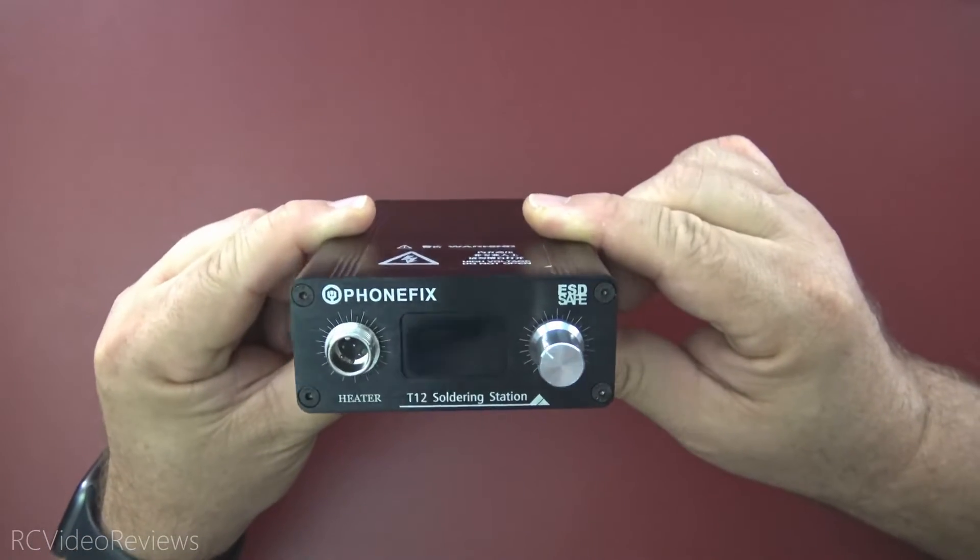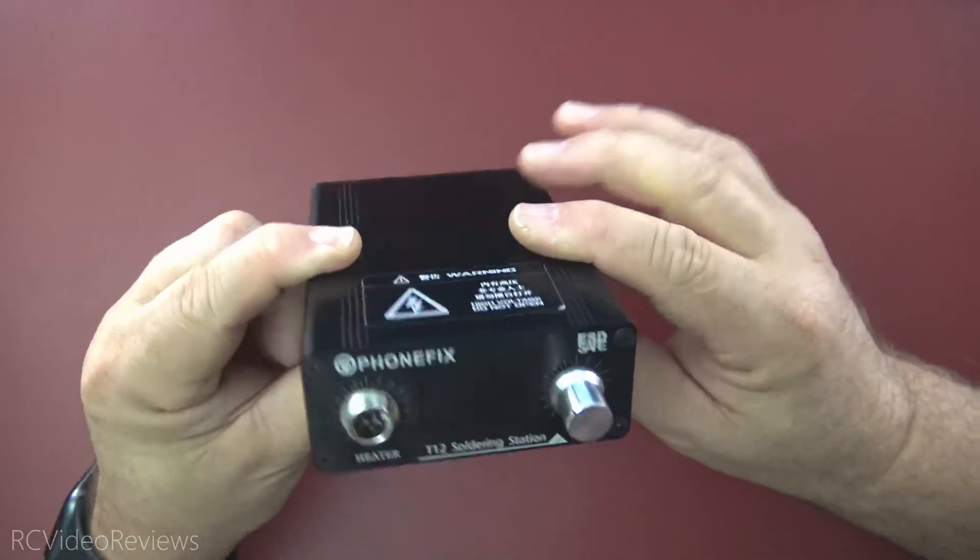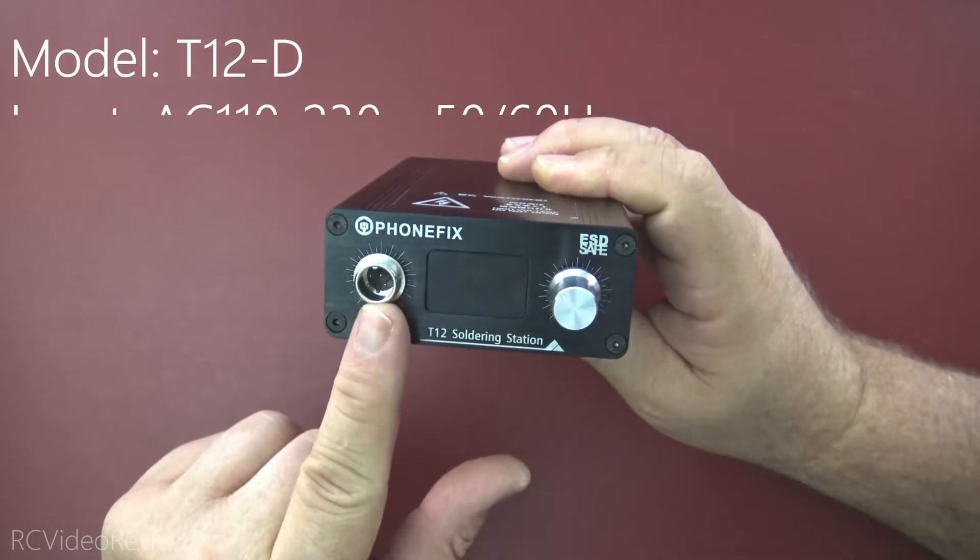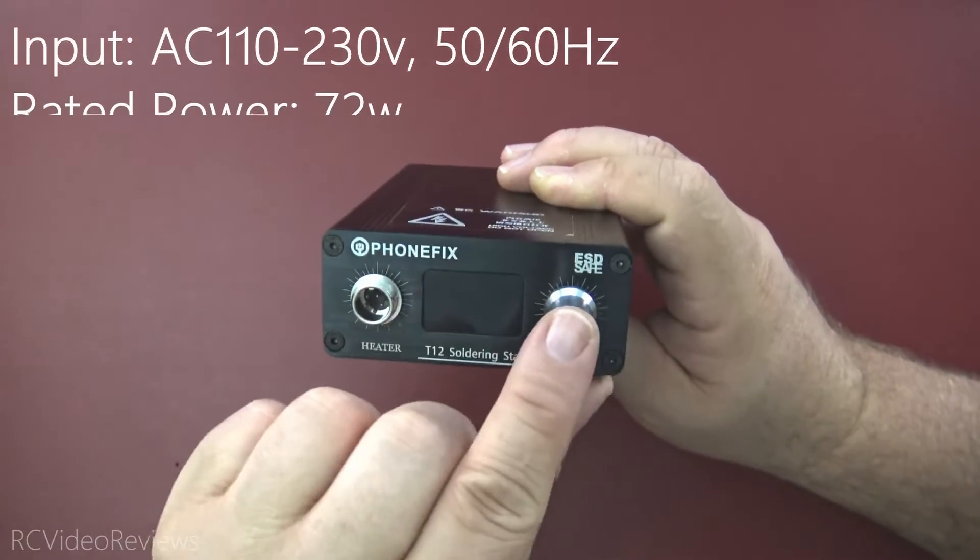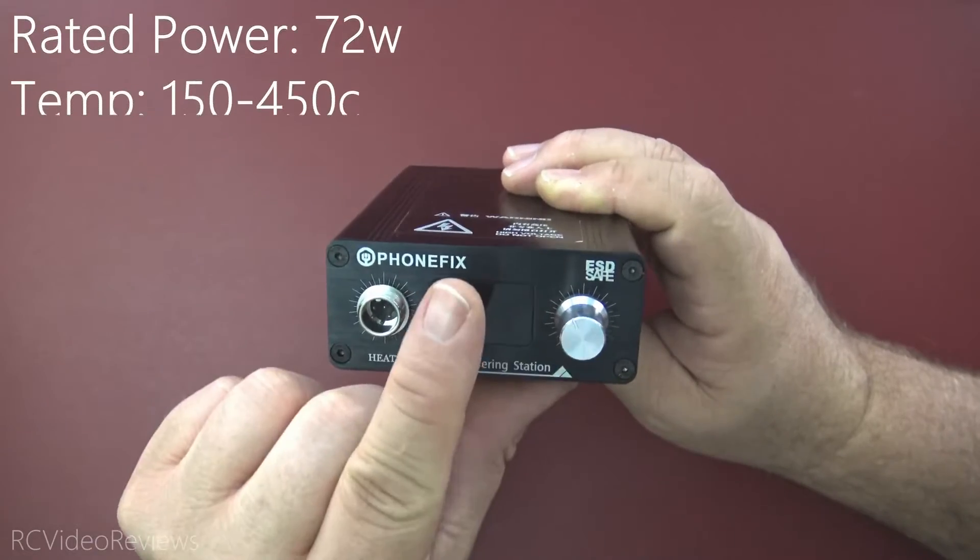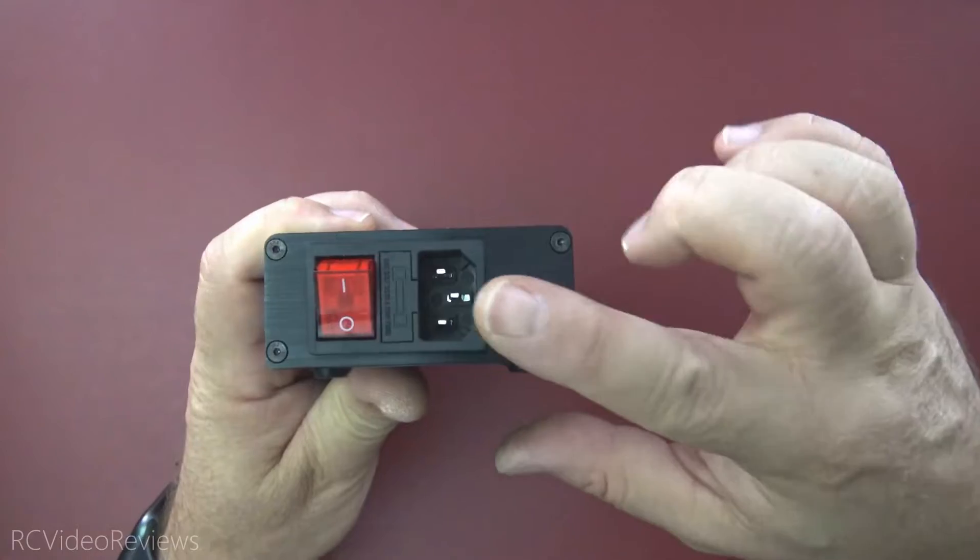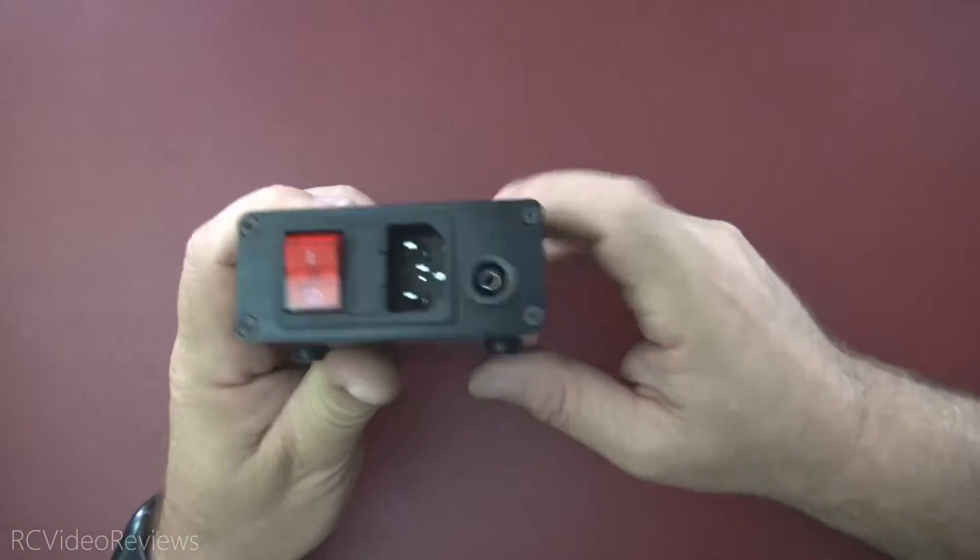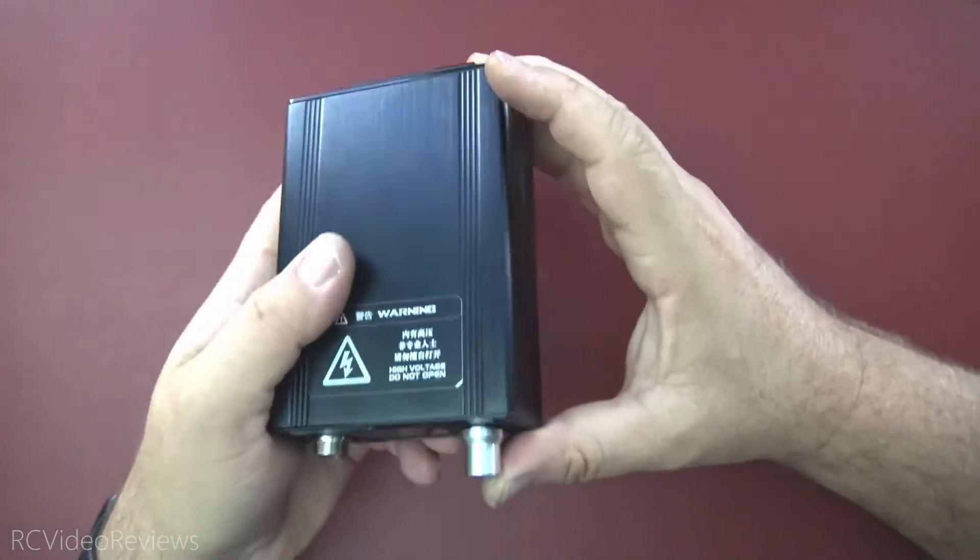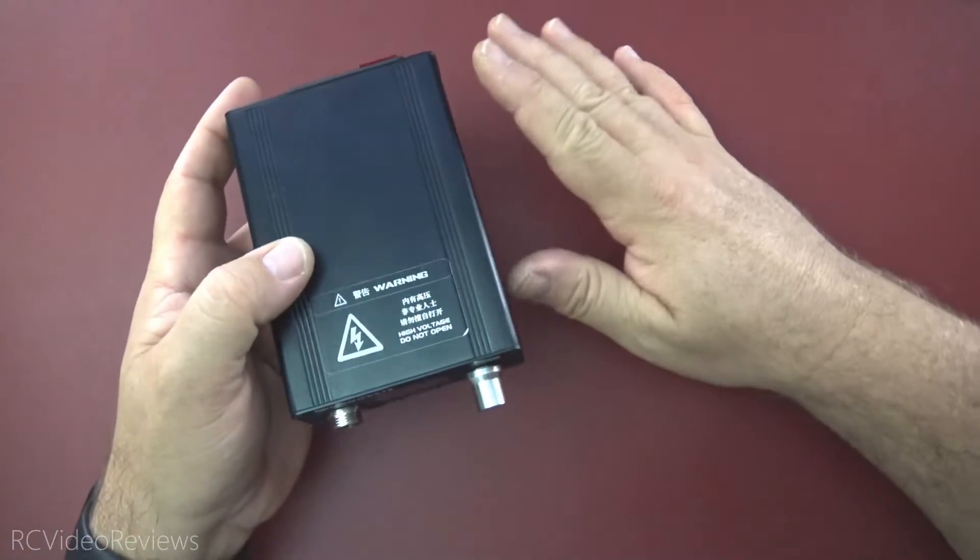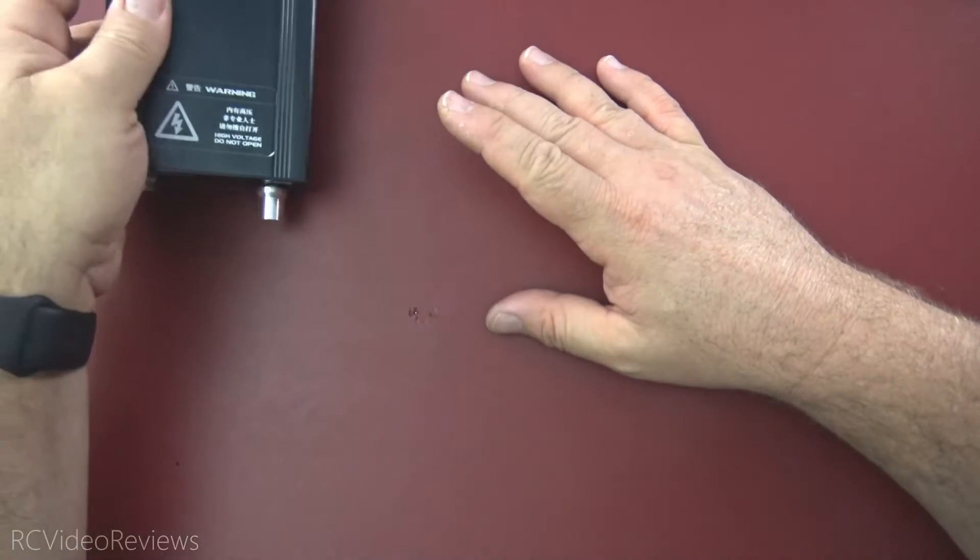We may as well start with the star of the show, the main unit itself. This is a metal enclosure with the soldering iron connection up front, a temperature gauge, and a button that you can press for a temperature boost if you need it. Around the back there's a plug for a grounding strap, the AC input, and a power on and off. I like the unit, it's nice and sturdy, all metal. I've done some soldering with it and no temperature issues at all. It stays nice and cool to the touch.